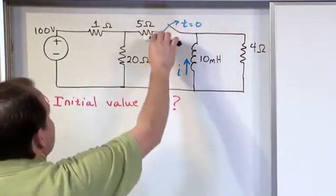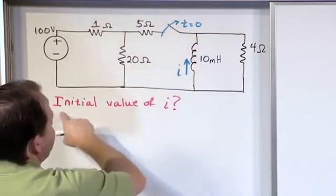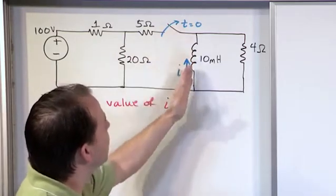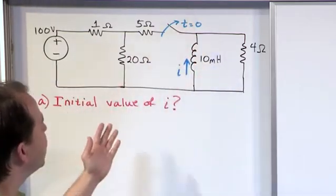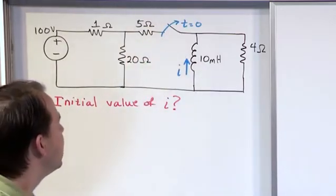That's what it looks like when it's closed. We have some current going through here, and the first question is: what is the initial value, meaning the value of the current through this inductor right at the time the switch opens when we start paying attention.